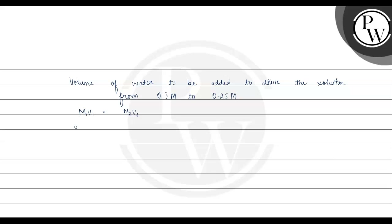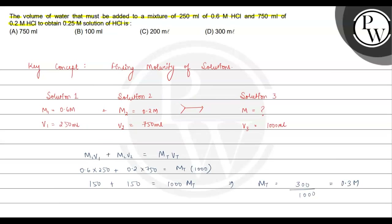Our initial molarity is 0.3 and volume is 1000 ml. After dilution, molarity is 0.25 and volume is unknown. So volume equals 0.3 times 1000 divided by 0.25, which gives 1200 ml. Total volume is 1200 ml, so water added is 1200 minus 1000, which is 200 ml. Hope you understood it well, best of luck.